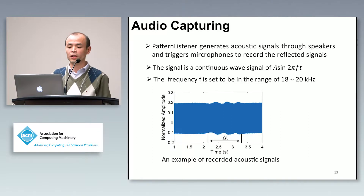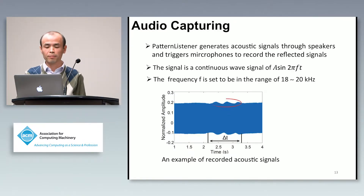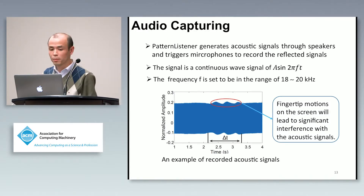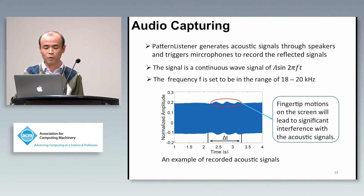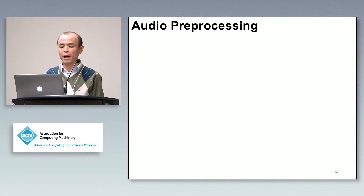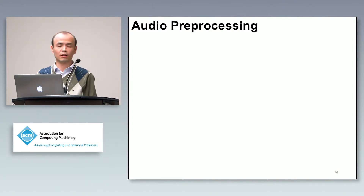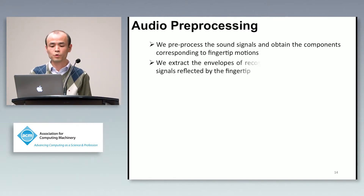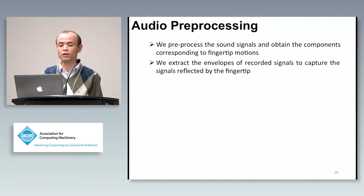Here is an example of the recorded acoustic signals. If the signal is interfered with by the fingertips, we can observe a significant change in the wave. After capturing the signals reflected by the fingertips, we upload the recorded signal to our server. The server then pre-processes the sound signals and obtains the components corresponding to the finger motions. We extract the envelopes of the recorded signals to capture and analyze the signal.